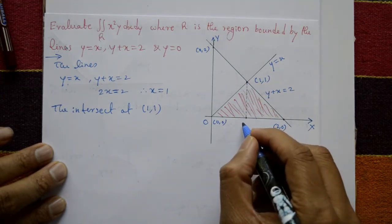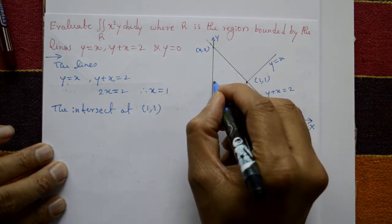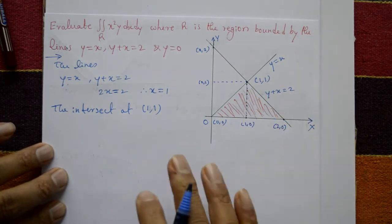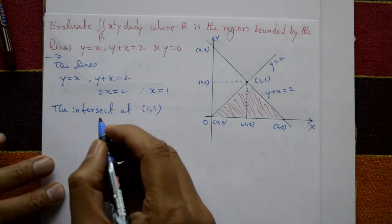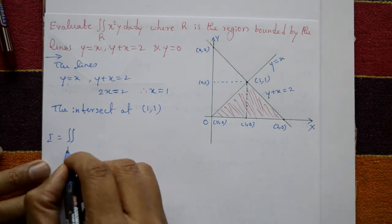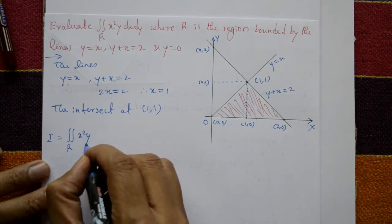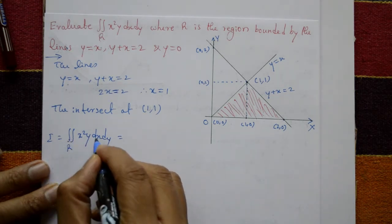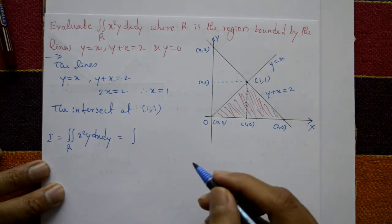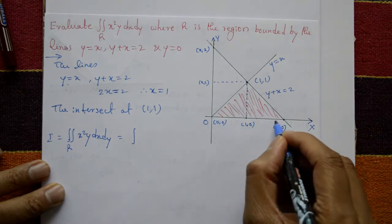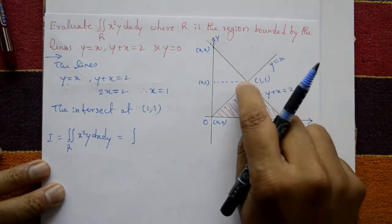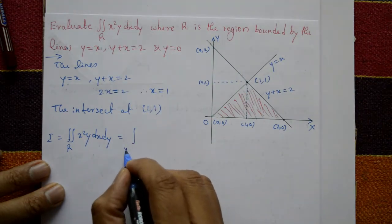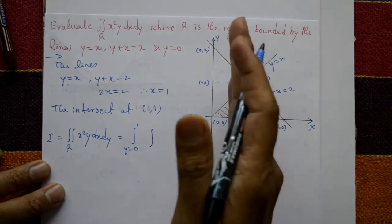This point is (1, 0) and this line gives (0, 1). Now for this area, I equals the double integral over r of x squared y dx dy. For dx dy, we first consider y from bottom to top: y equals 0 to 1.